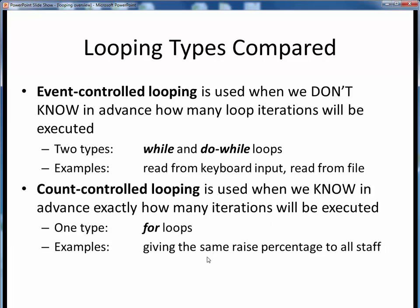By contrast, in count-controlled looping, or for loops, we know going in exactly how many times we're going to need to execute some set of instructions. For example, suppose the CEO decides she's going to give the same 10% raise to everyone in the company. HR presumably knows exactly how many employees that entails, so it's just a matter of applying that same 10% raise to everyone's salary in the HR database, one employee at a time, in a for loop.